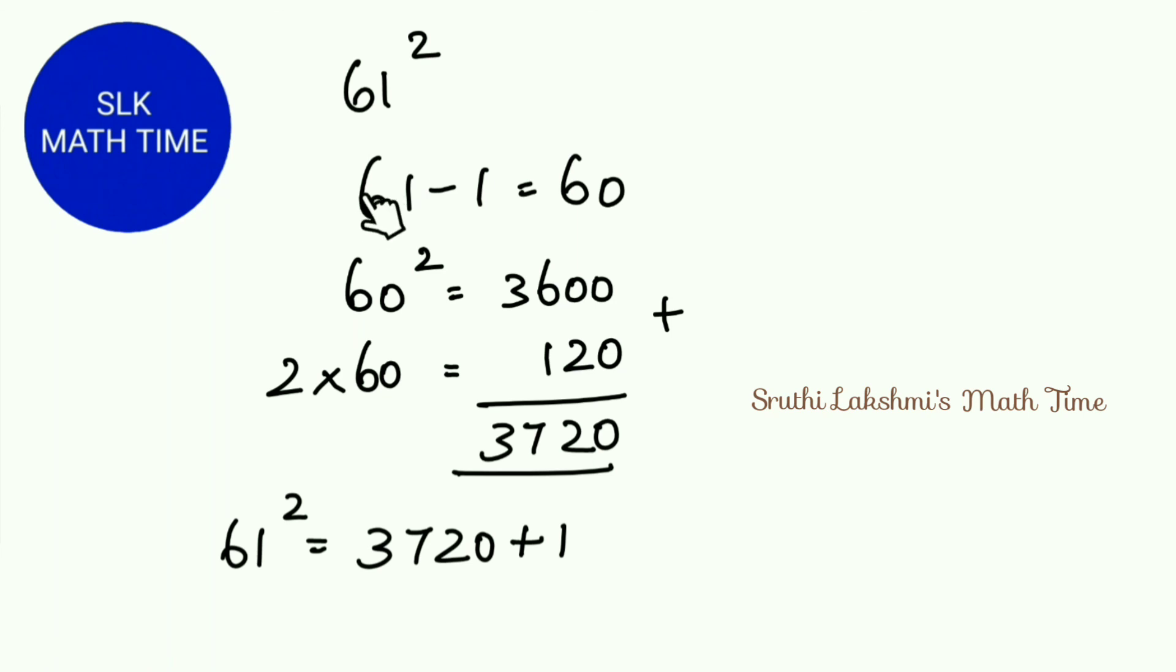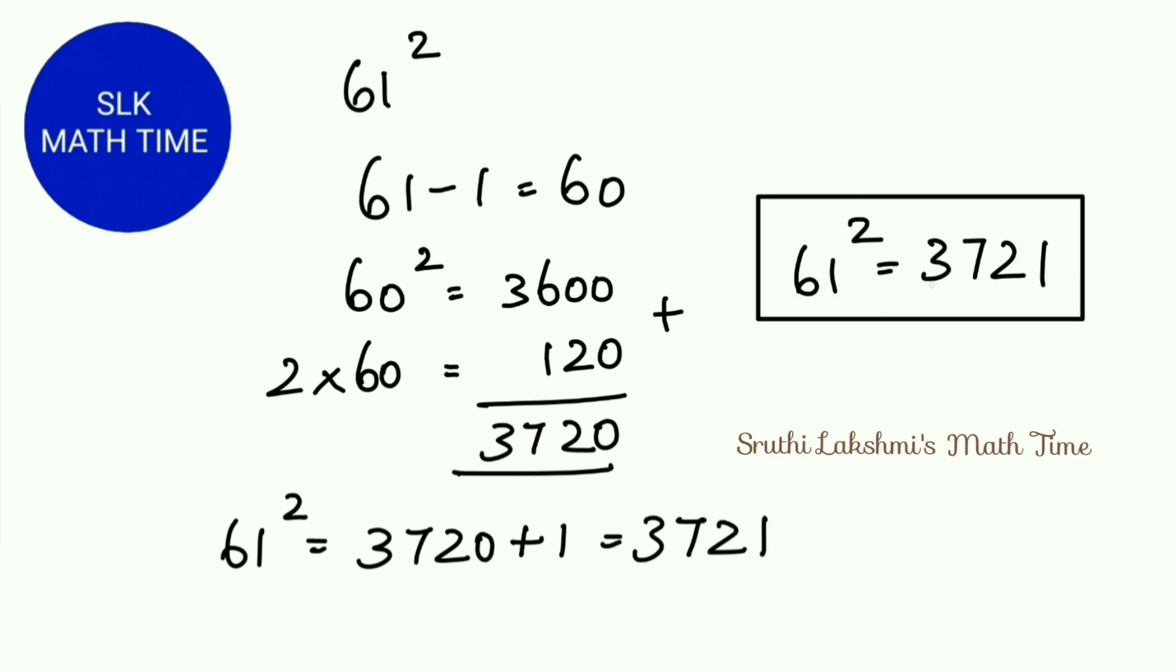So 61 square is 3720 plus the 1. Remember we subtracted 61 minus 1. So 3720 plus 1 which is 3721. So 61 square is 3721. See how easy this method is. Thanks for watching.